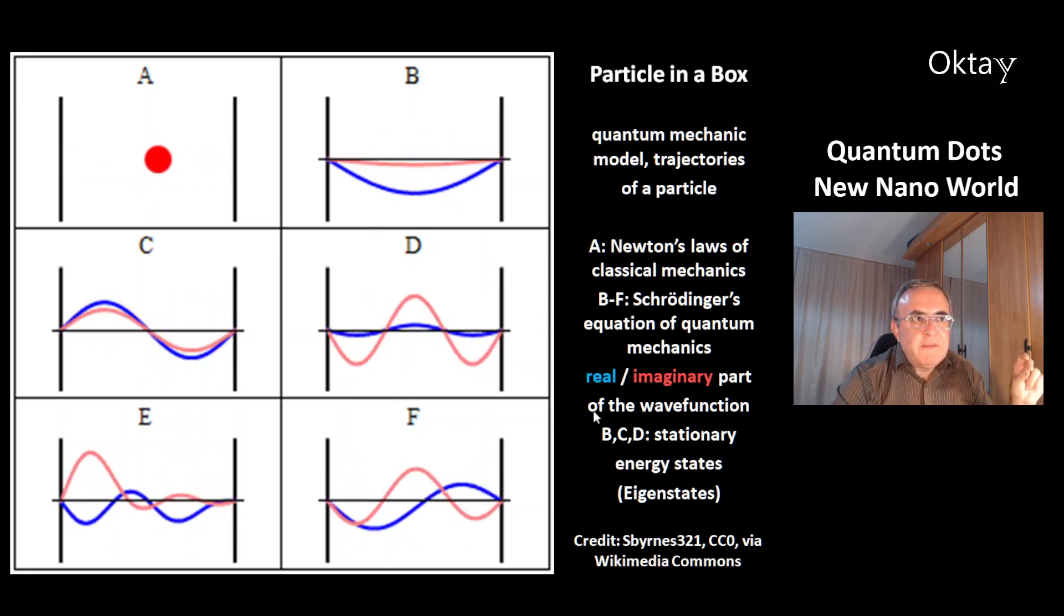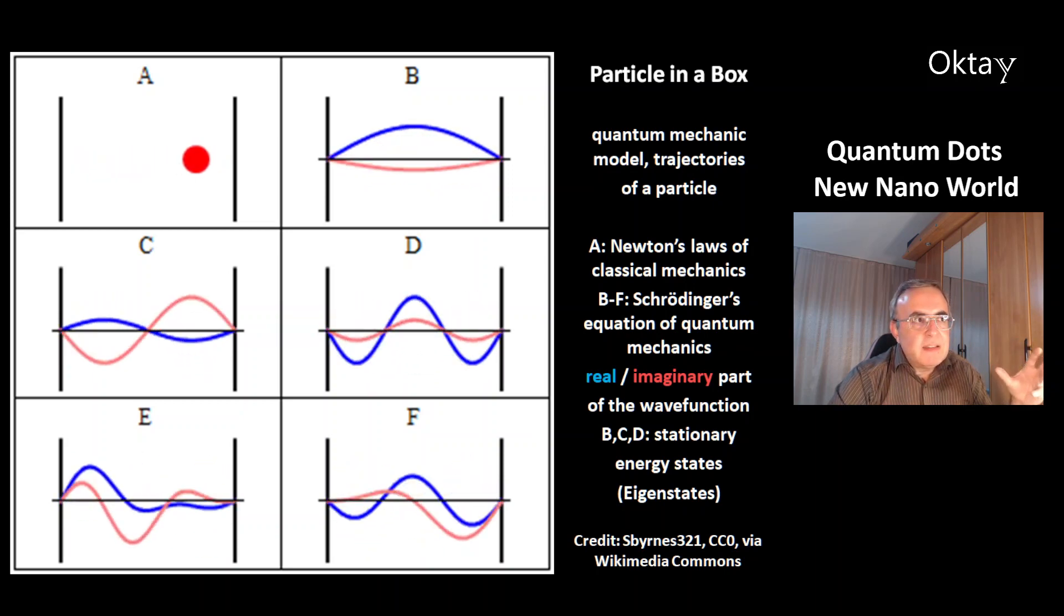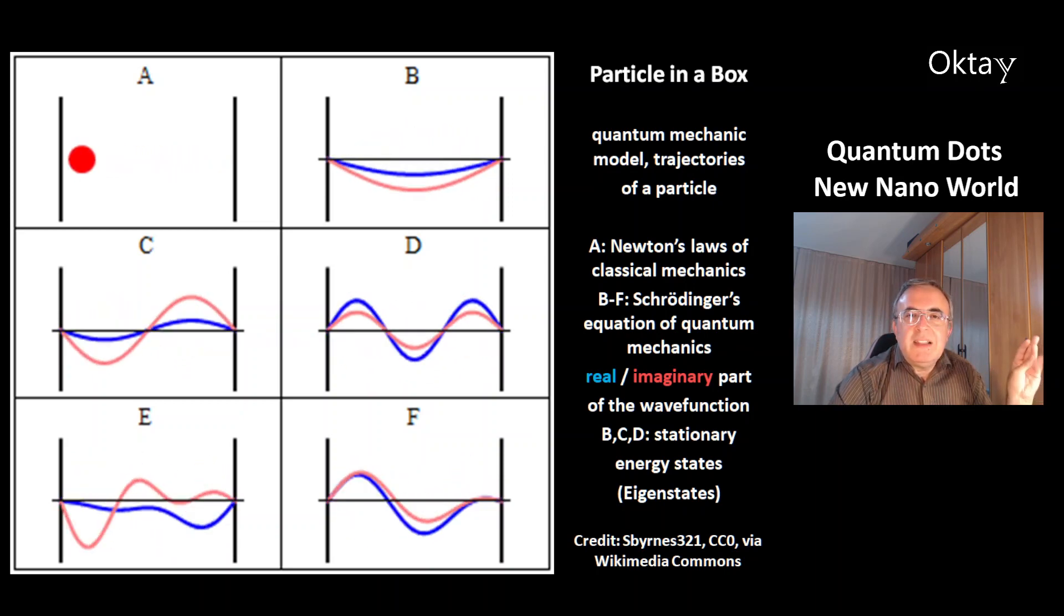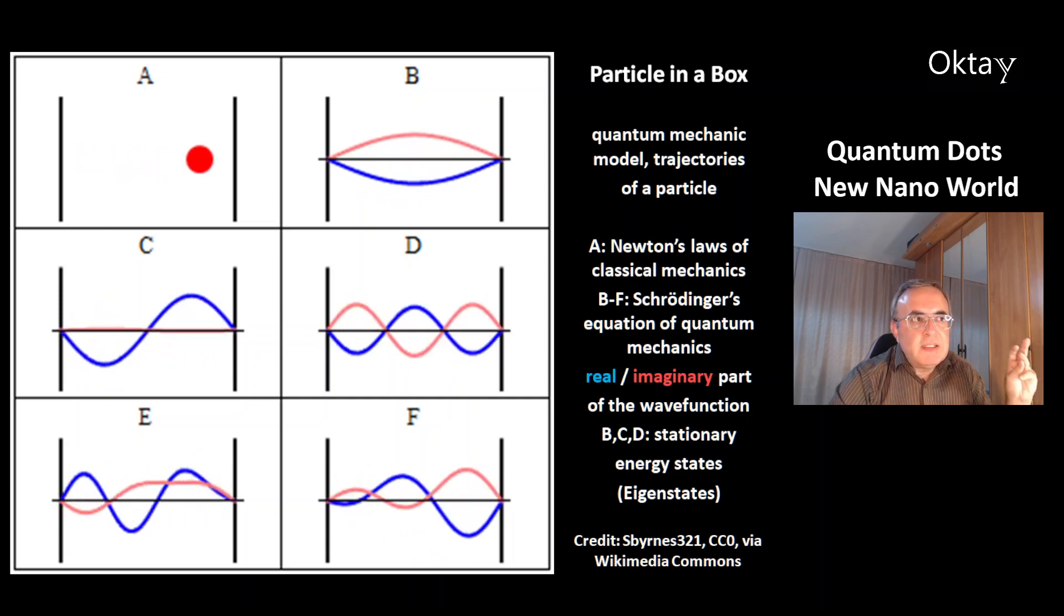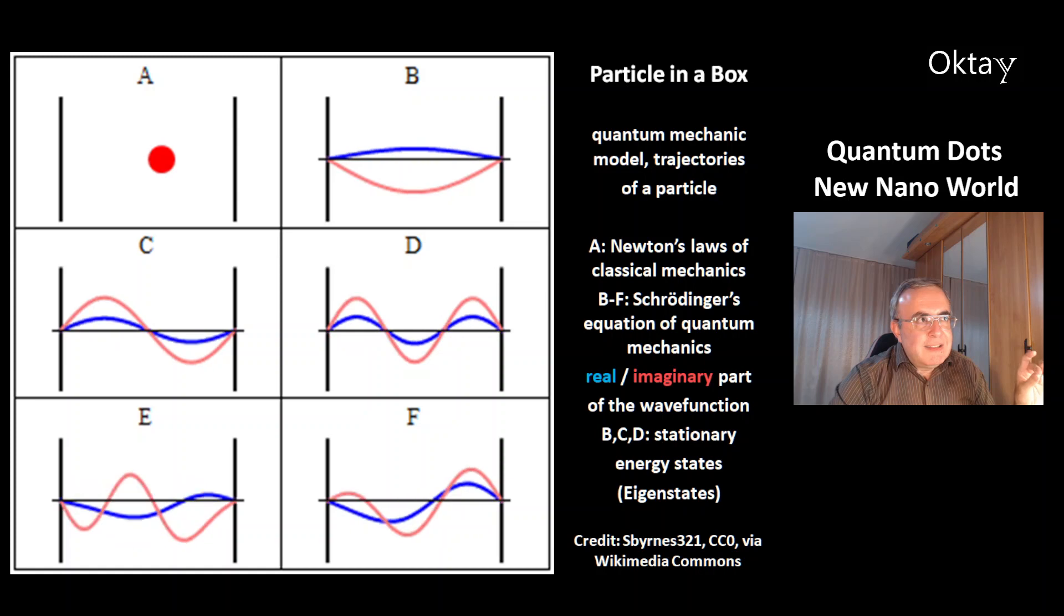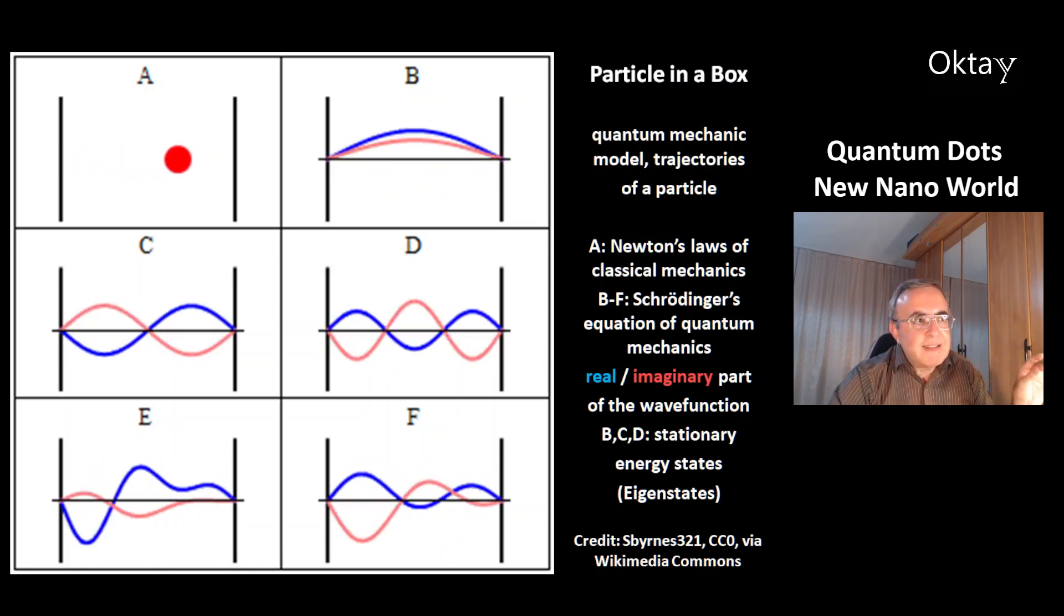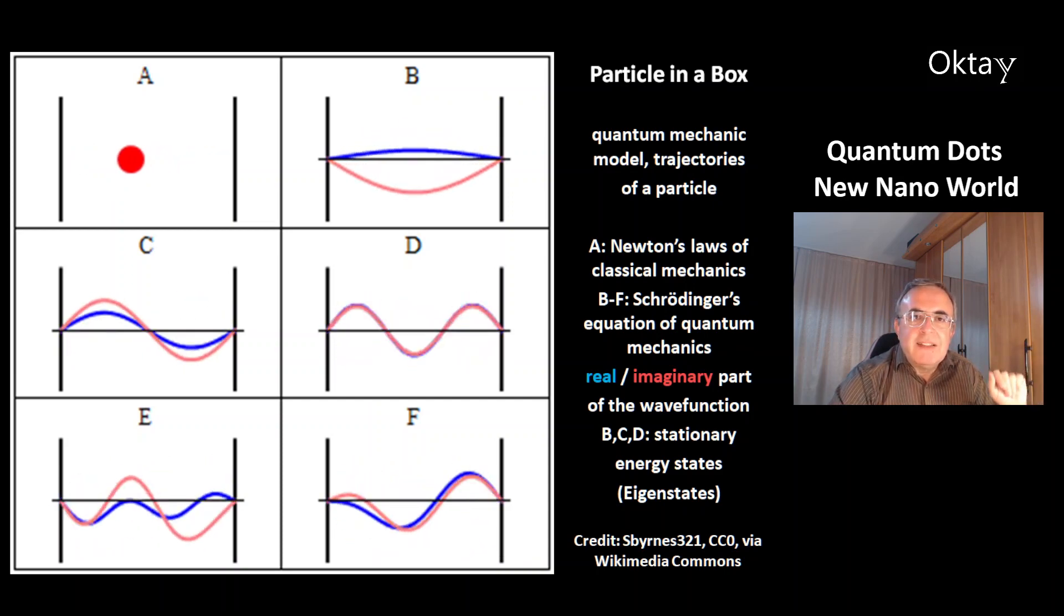The other five, B to F, are Schrodinger's equation of quantum mechanics. The blue is the real part of the wave function and the red is the imaginary part. You can see B, C and D are stationary energy states. They are called eigenstates. E and F are not eigenstates.